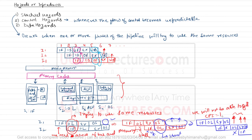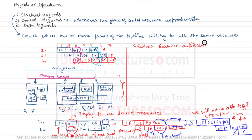This inability to achieve CPI equal to 1 is due to structural hazards. The easiest proposed solution is resource duplication or replication — if multiple phases commonly access the same resource, we duplicate that resource so parallel accesses don't conflict.